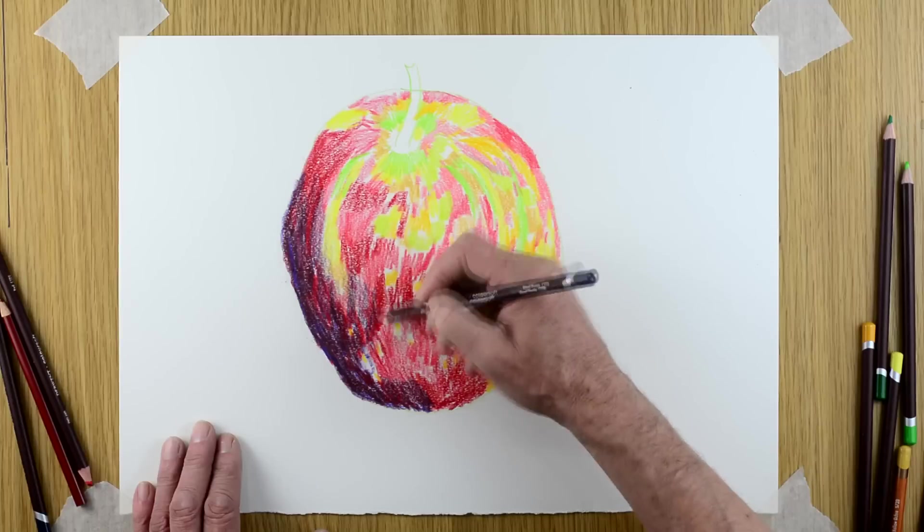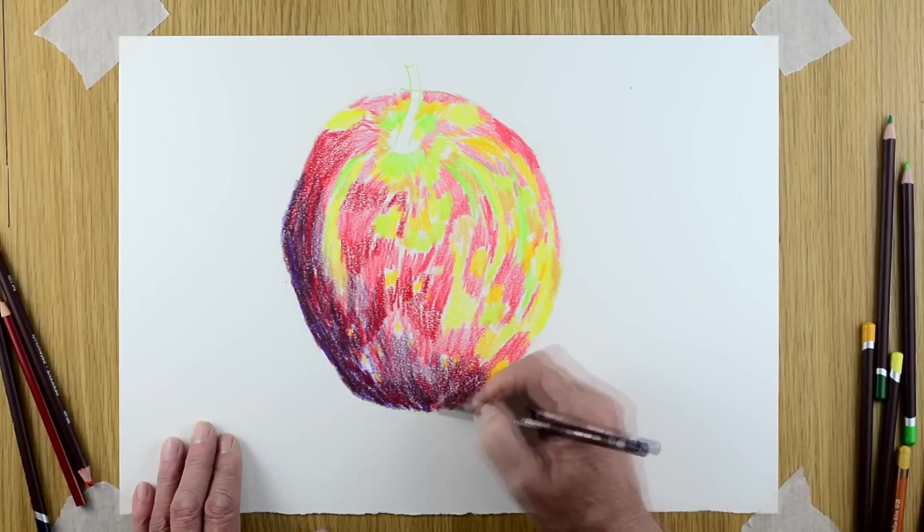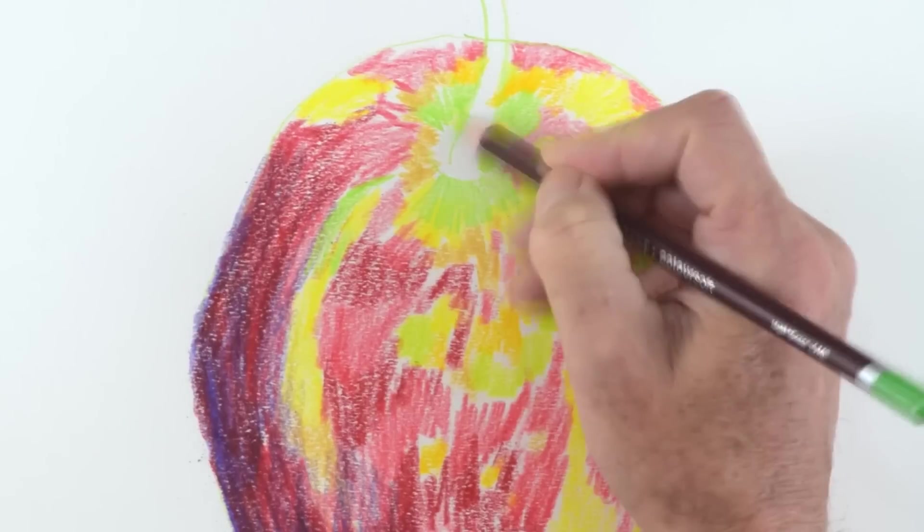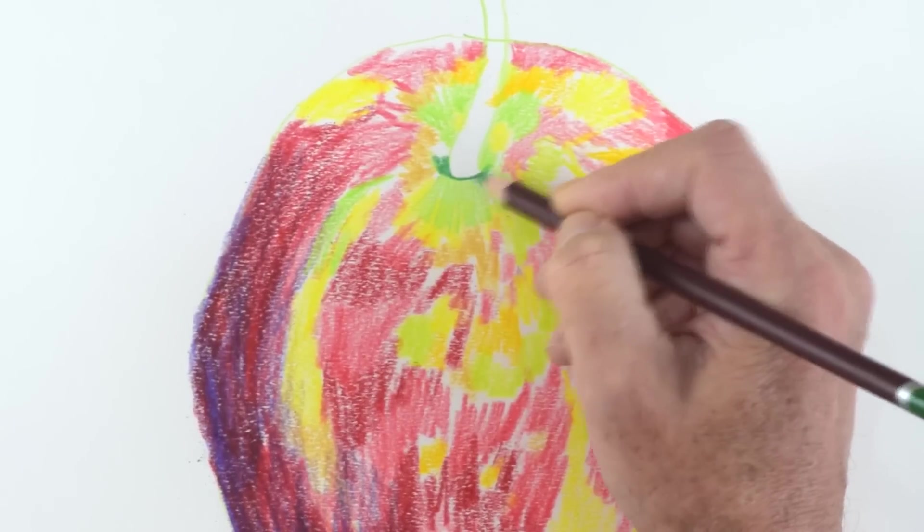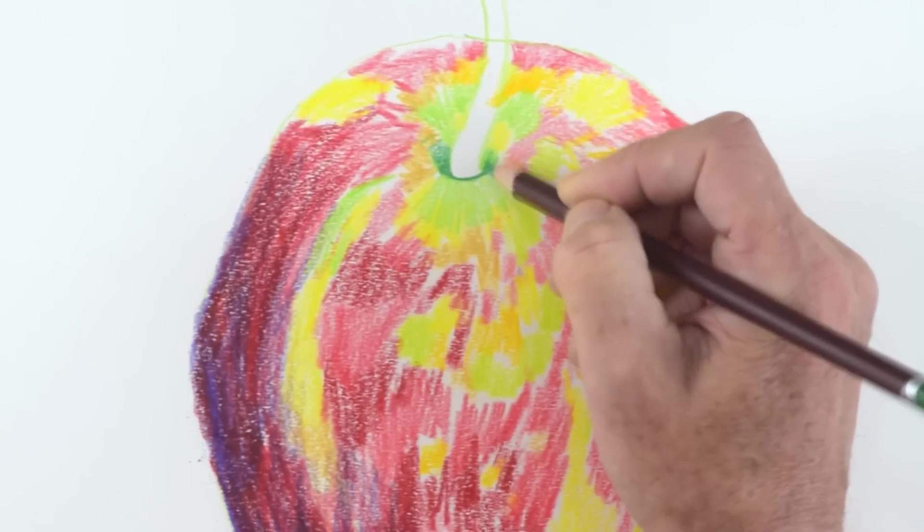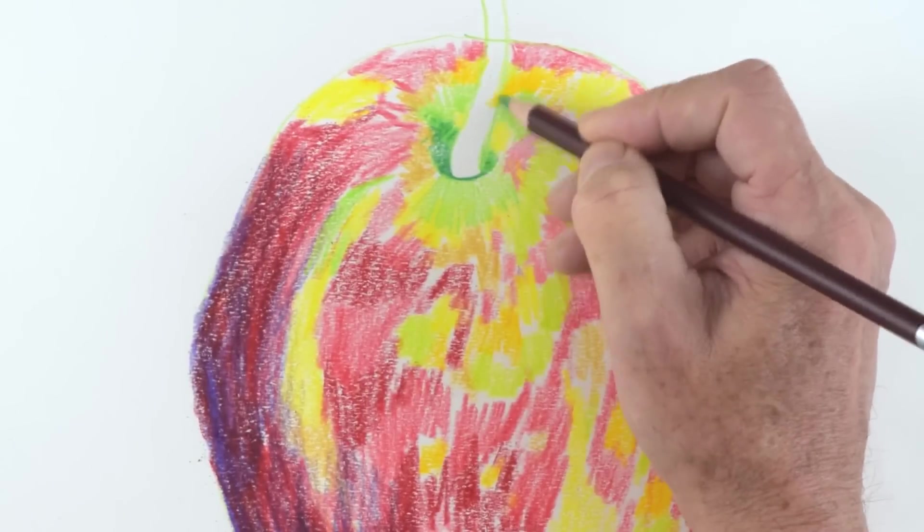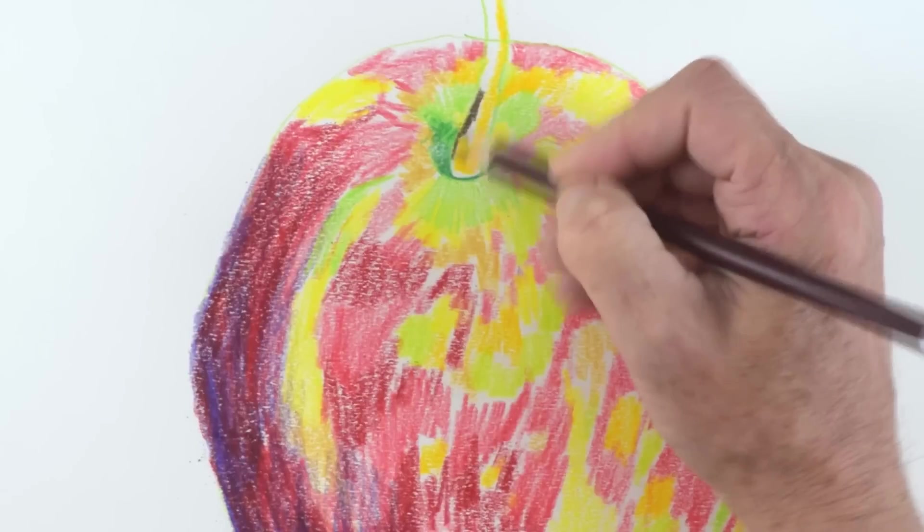I'm using now a slightly lighter purple now just to blend over some of the reds and begin to suggest the darks. Now you may want to try when you're looking at your drawing to try to screw up your eyes and squint at the drawing because then you'll see all the tones, you'll see areas where you need to make the tones lighter or darker.